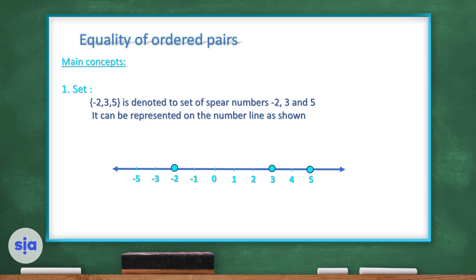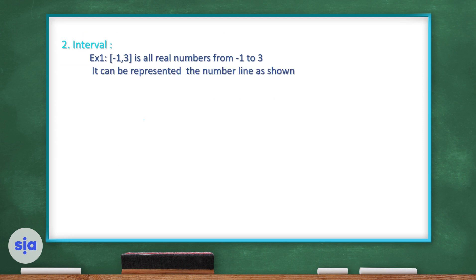If you want to label a number in a set, you just make a circle on that number. The second concept is the interval. If the bracket is like this, it means that negative 1 is included — we call it closed. Here the 3 is also included, so the 3 is also closed.